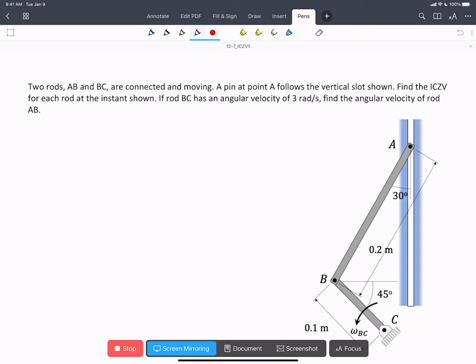All right, we have this problem where we've got two rods, AB and BC. They're connected. BC is pinned at C, and pin A here is traveling in this slot. We're asked to find the ICZVs for each rod at the instance shown and the angular velocity of rod AB.